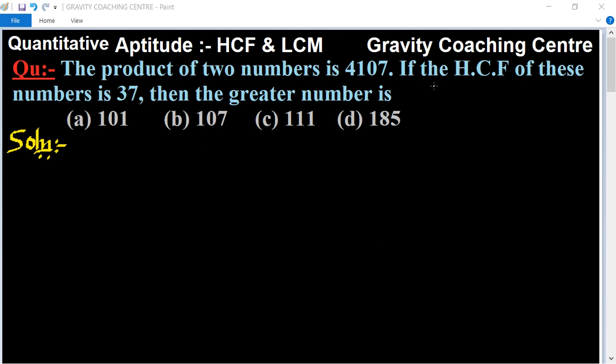The product of two numbers is 4107. If the HCF of these numbers is 37, then the greatest number is what? In this question, the product of two numbers is given and the HCF is given. We need to find the greatest number.